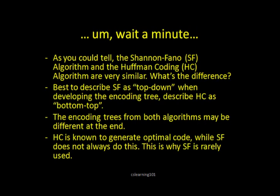You probably noticed something here. As you can tell, the Shannon-Fano algorithm and the Huffman coding algorithm are very similar. And a lot of people get confused about what exactly the difference is. The best way to describe the difference is that the Shannon-Fano algorithm is a top-down algorithm, and it makes an encoding tree from top down. But the Huffman encoding algorithm makes an encoding tree from the bottom up. This might not seem like a big deal, but it really is. And the encoding trees from both algorithms may be very different at the end. They may be similar, but they may be different.